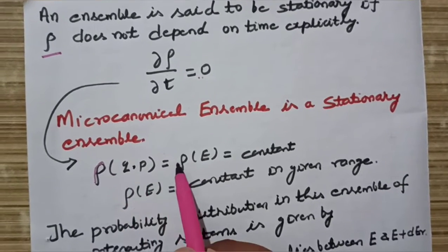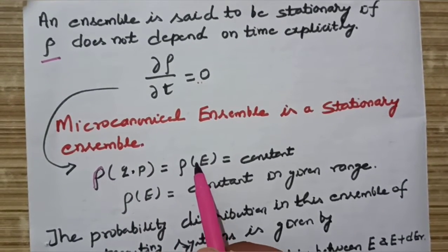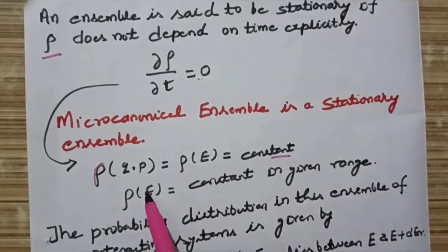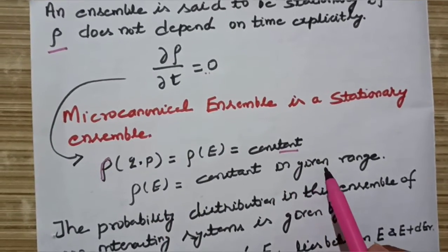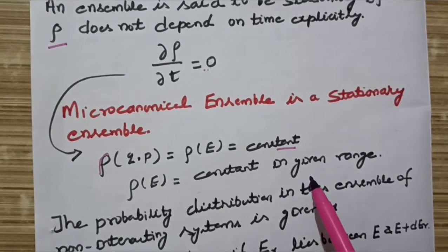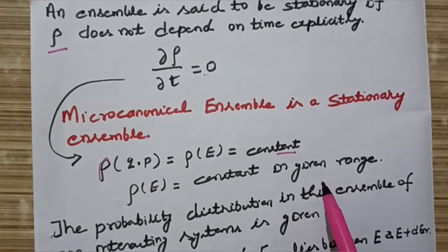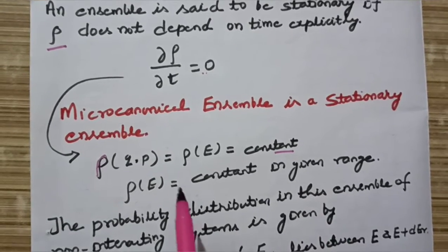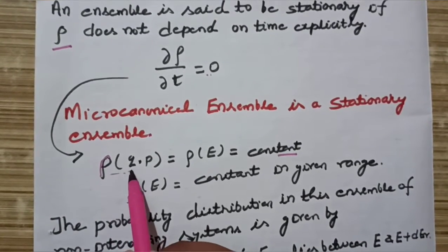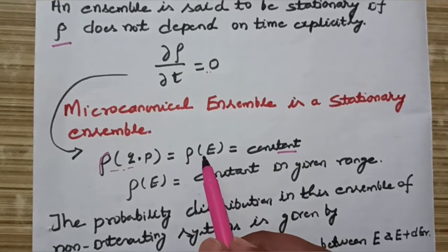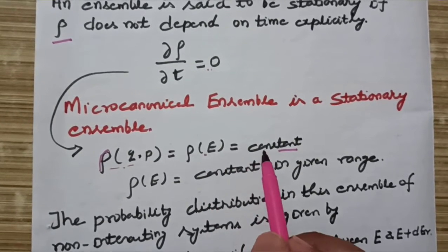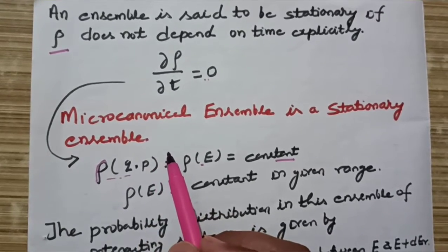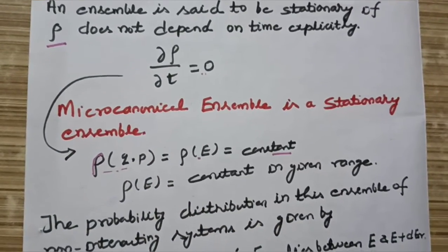The condition ∂ρ/∂t = 0 signifies that ρ(q,p) equals ρ(E), and ρ(E) is constant within a given energy range. As discussed in the previous lecture using Liouville's theorem, when the density distribution function is constant in an energy range, it is an example of the micro canonical ensemble.